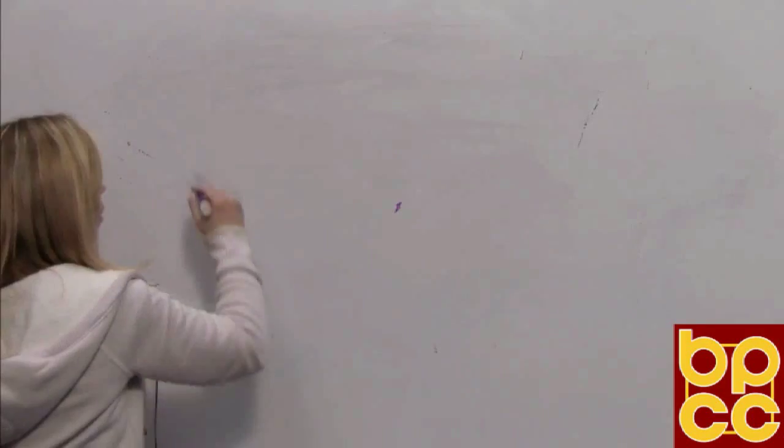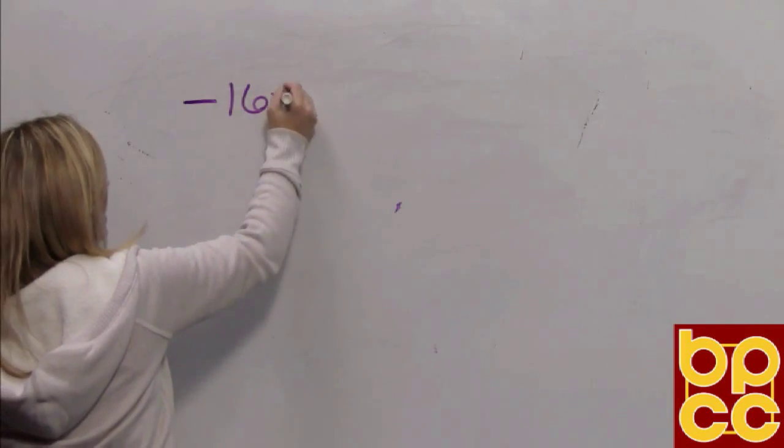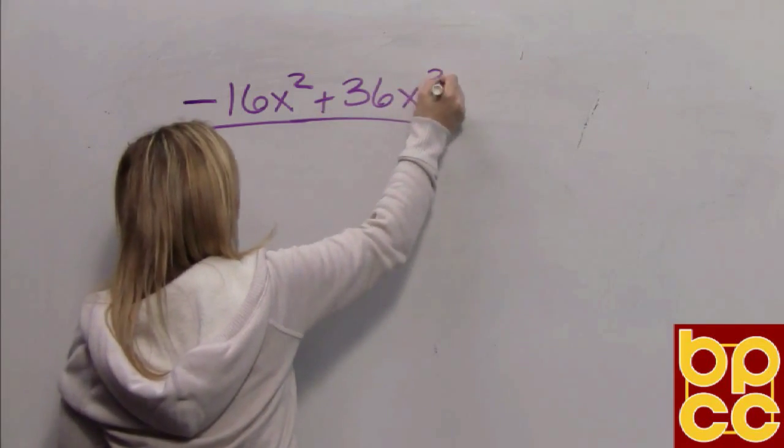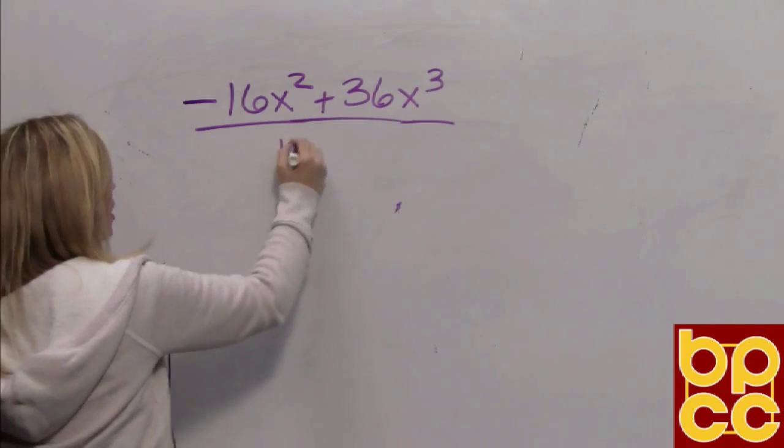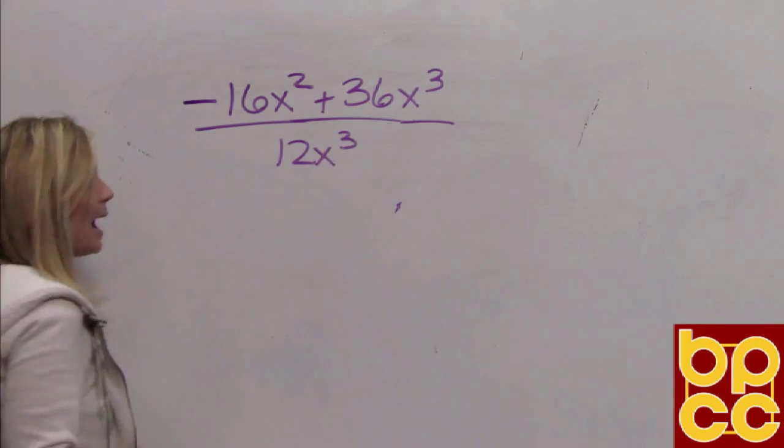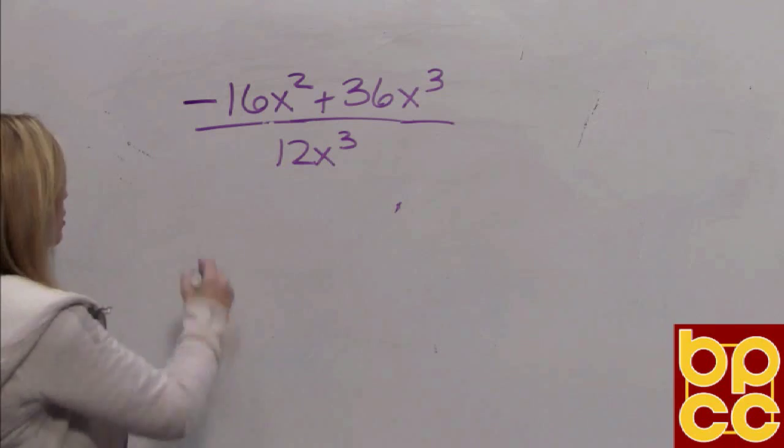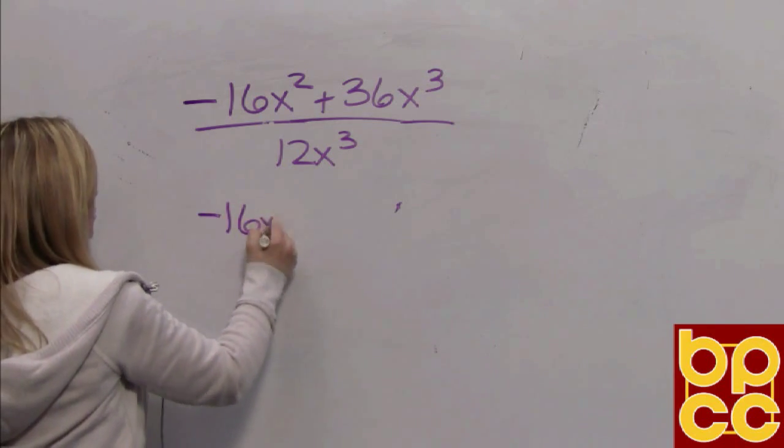Let's look at example four. Negative 16x squared plus 36x cubed over 12x cubed. Now we have a binomial, two terms. We're going to divide it by this monomial. So we're going to break this up into two division expressions.